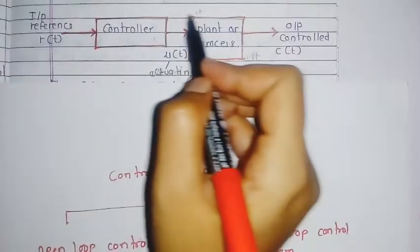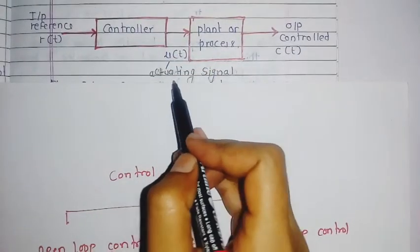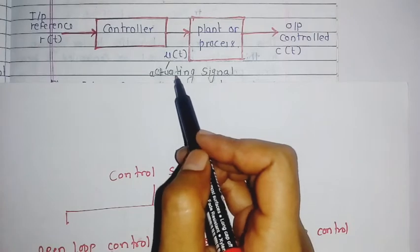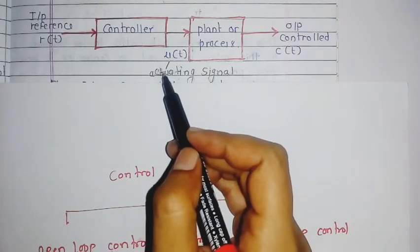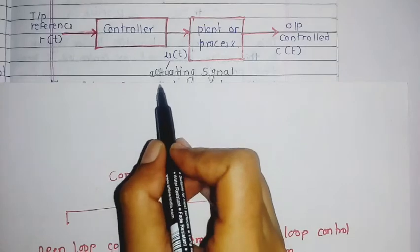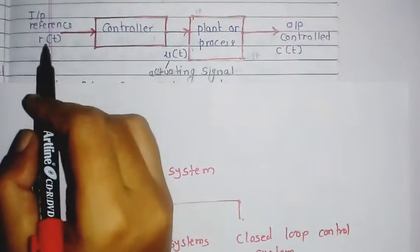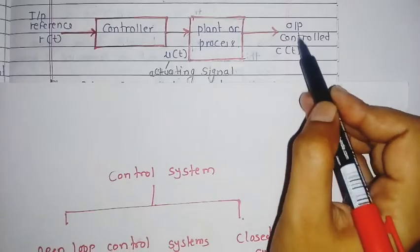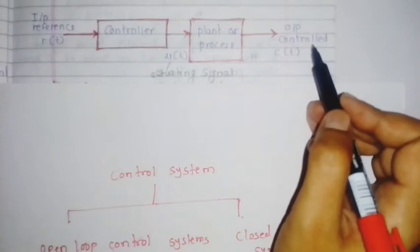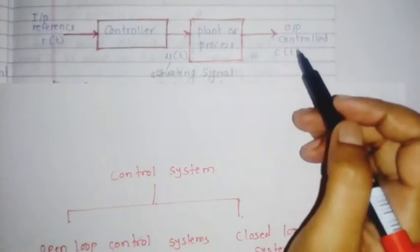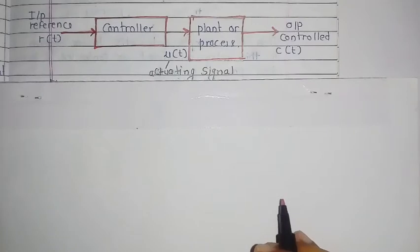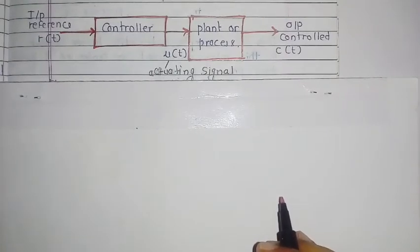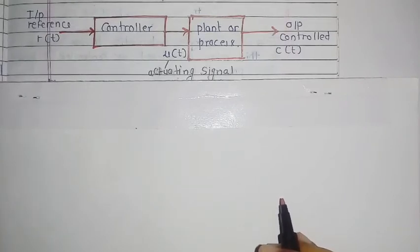This is the working of the open loop control system block diagram. In that, r(t) is the input reference, u(t) is the actuating signal, and c(t) is the output control. The definition of an open loop system is that any change in the output has no effect on the input.